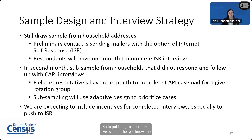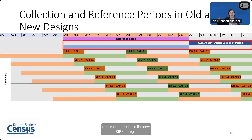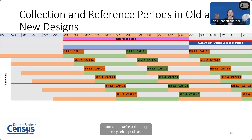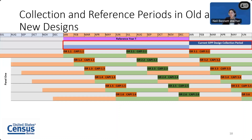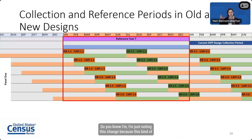To put things into context: the current SIPP design collects information from January to June of the year after the reference period — so we're collecting very retrospectively, covering January to December of the reference year. The new SIPP design will instead collect information over the course of the reference period itself. This is an important change to keep in mind when thinking about the transition from old to new design.